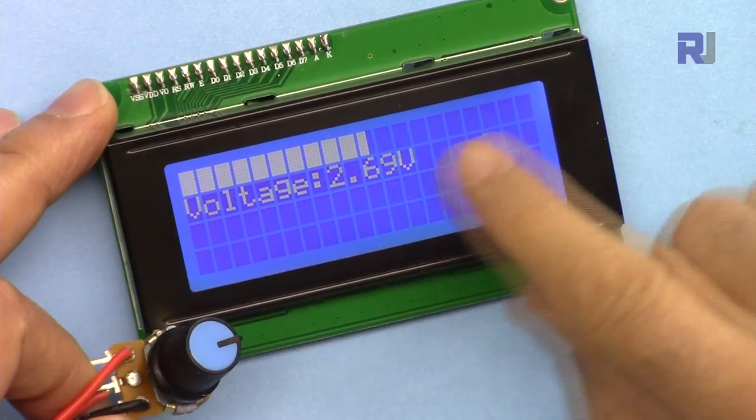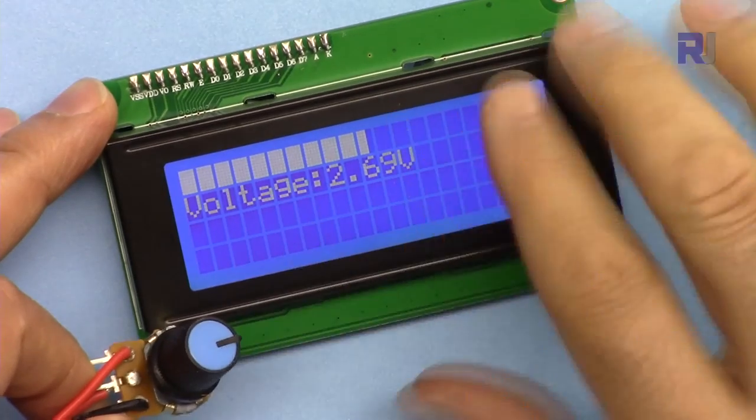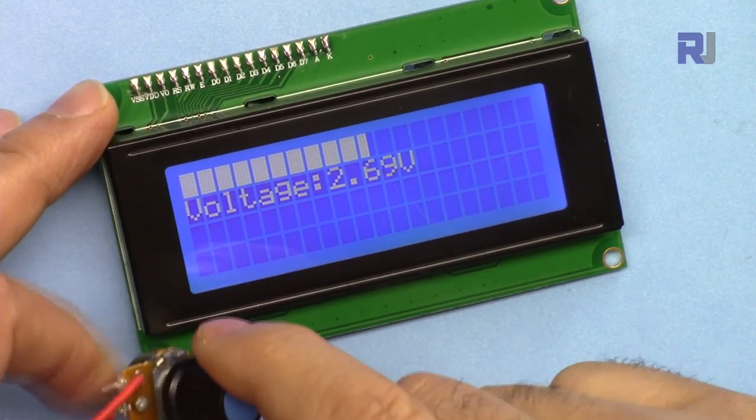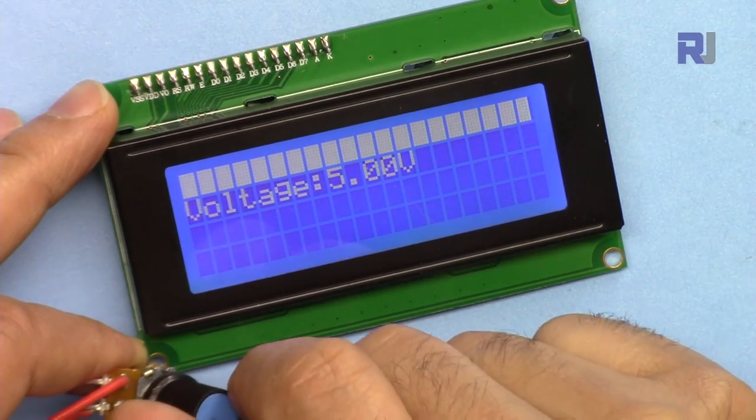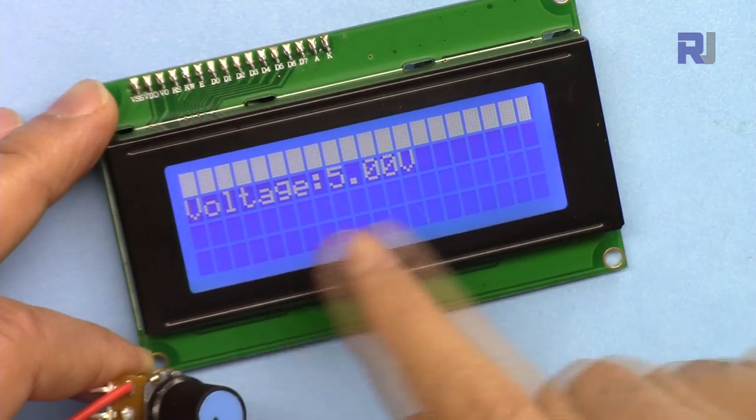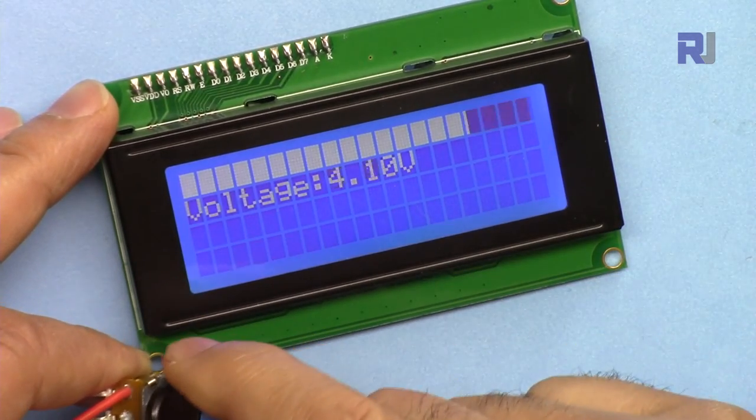And the code works with this LCD 2004 exactly the same way. Right now we have 20 characters, and at five volts it goes to the 20 characters.